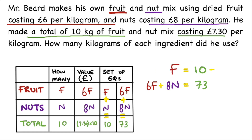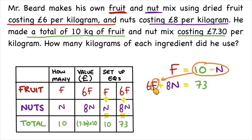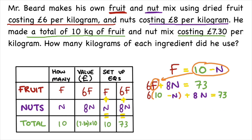What I'm going to do is rearrange the first equation to say f is equal to 10 minus N. Since we know what f is, we can substitute it into the second equation. So I can rewrite the equation as: 6 bracket (10 minus N) plus 8N equals 73. Now if I expand those brackets, I have 6 times 10, which is 60, and then 6 times minus N, which is minus 6N.